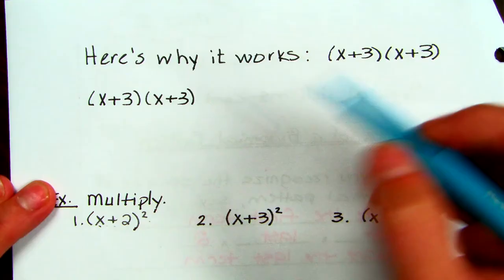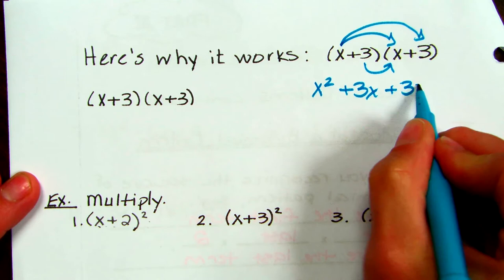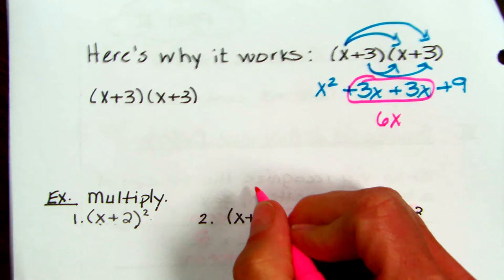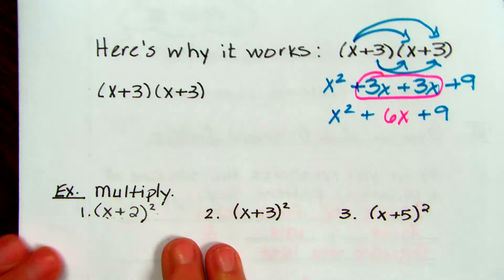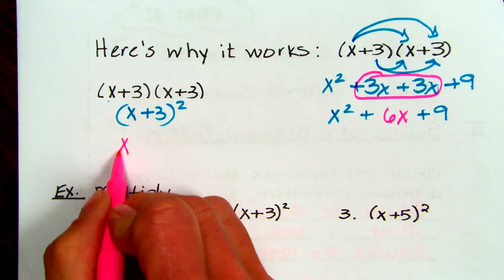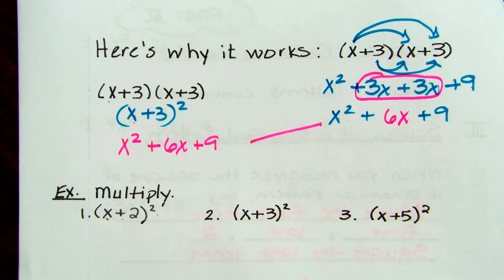Here's why that special pattern works. Using FOIL on X plus 3 times X plus 3: X times X gives X squared, X times 3 gives 3X, 3 times X gives 3X, and 3 times 3 is 9. Those middle terms combine because it's 3 times X times 2 — they double, giving you 6X. Using the special pattern: X plus 3 squared — square the first gives X squared, first times last times 2 gives X times 3 times 2, which is positive 6X, then square the last. They are exactly the same — it's a shortcut.